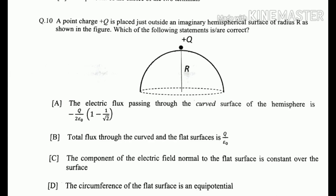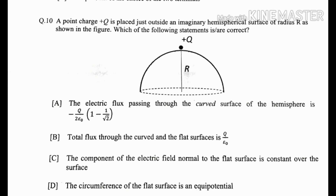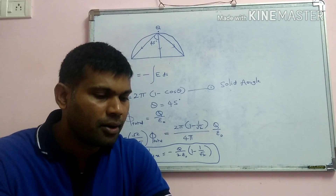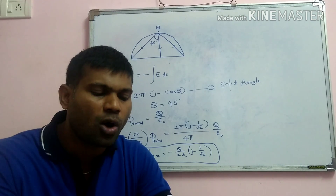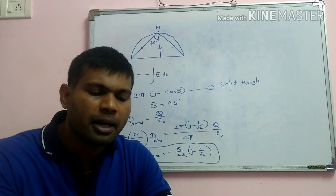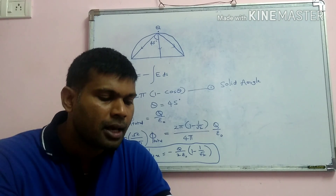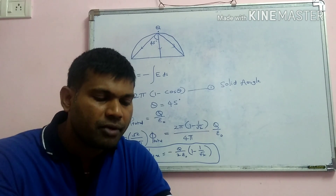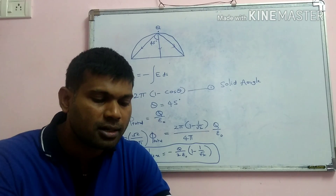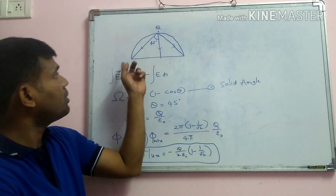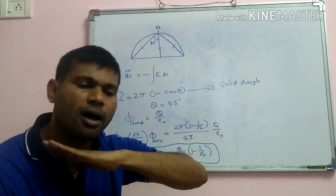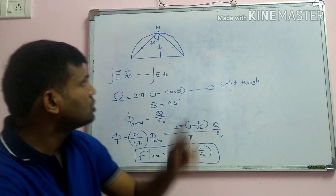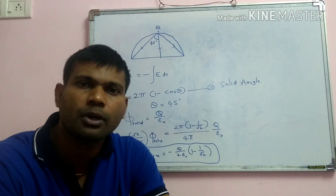Question number 10: a point charge +Q is placed just outside an imaginary hemispherical surface of radius R, as shown in the figure. We need to determine which statements are correct.